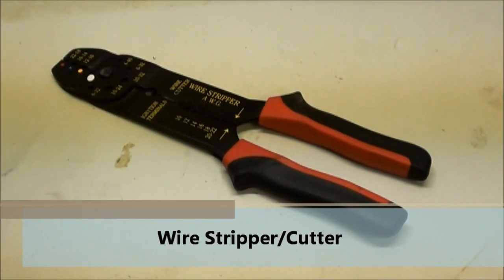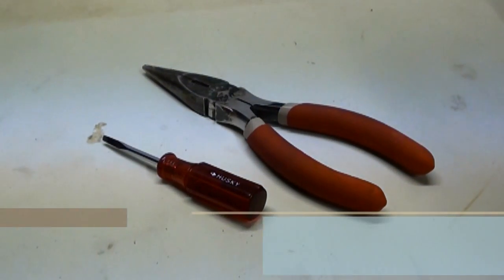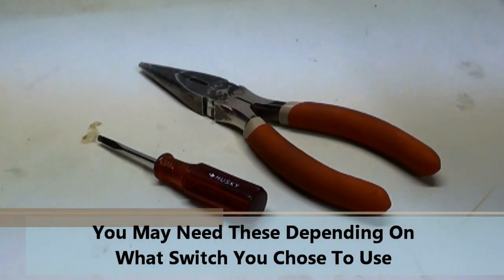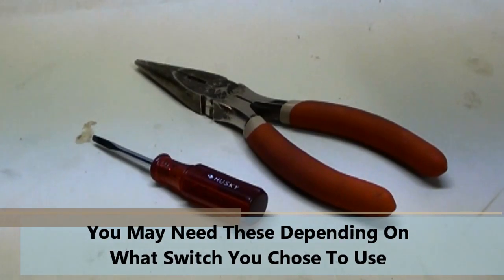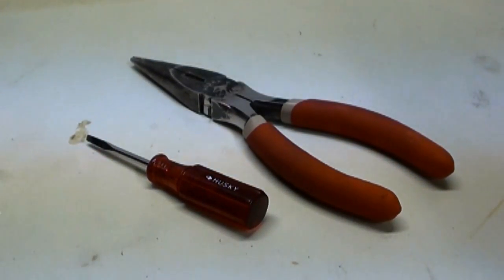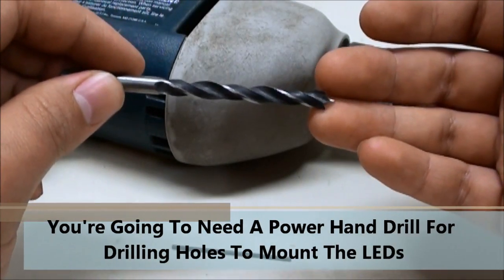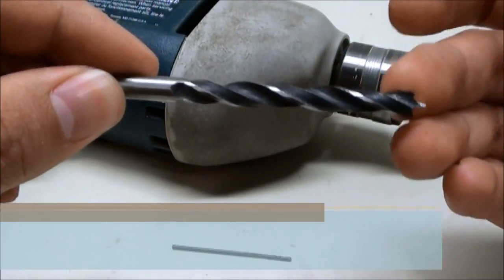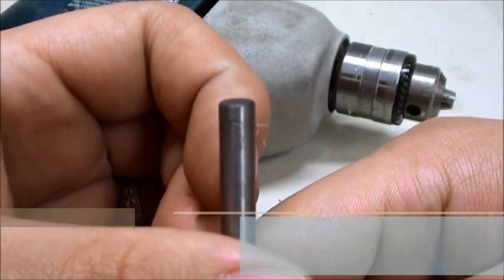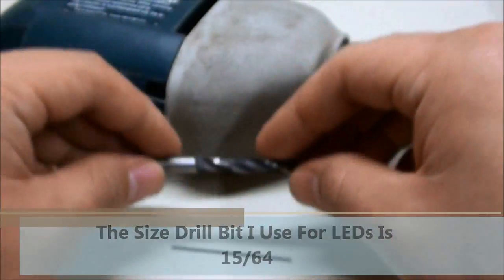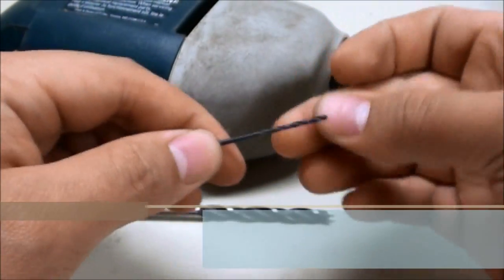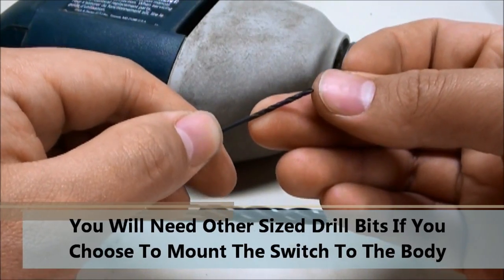You're going to need a wire stripper and cutter. Also, you're going to need a small flathead screwdriver and needle nose pliers just to help you install the switch. You're obviously going to be drilling some holes into the body in order to mount the LEDs. The size of the drill bit that I use is 15/64. You might need to use some other drill bits in order to make the holes to mount the switch.